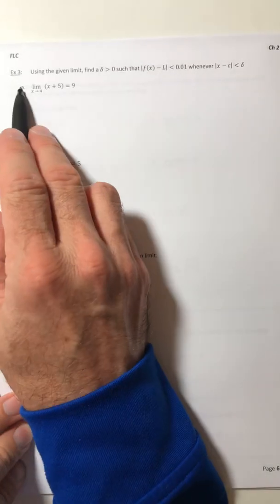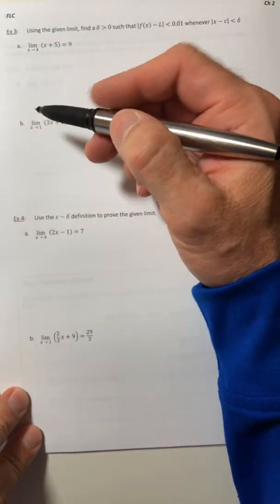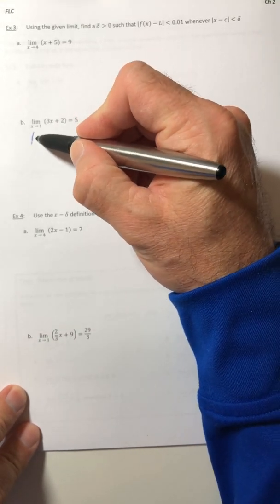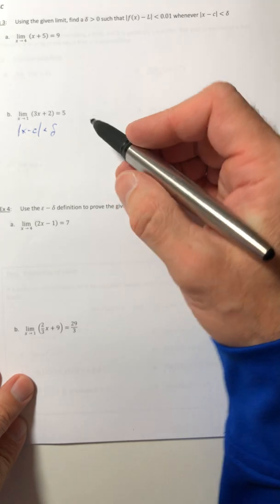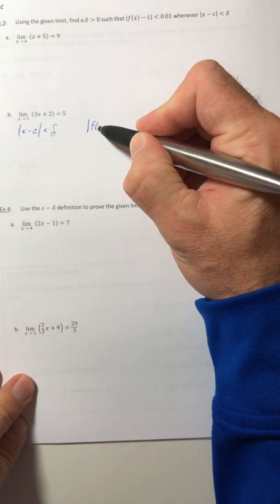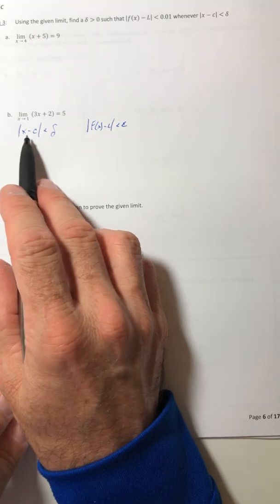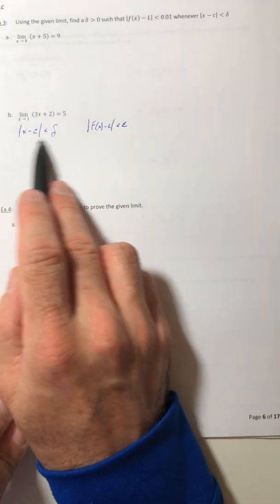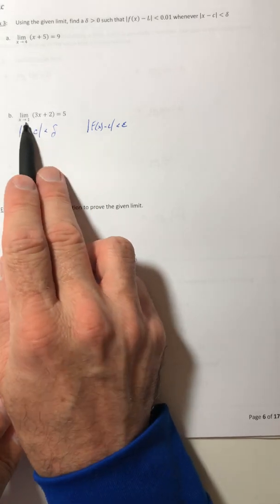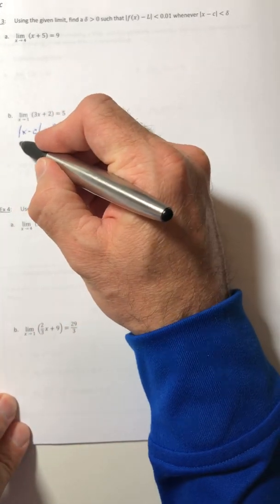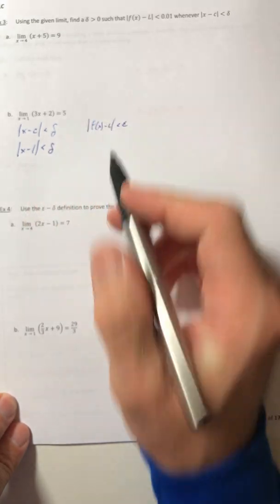So I'm actually going to do part B. You're going to set up the two absolute values. You're going to set up the absolute value of X minus C is less than delta. And then you're also going to set up and work with the absolute value of F(x) minus L is less than epsilon. And you're going to start plugging as much stuff in as you can. So on your first inequality here, the only thing you know is the C - that's what X is approaching. So the only thing on this one that you can plug in is the 1. You don't know what X is. You don't know delta.